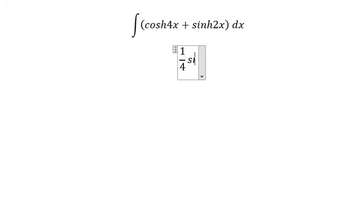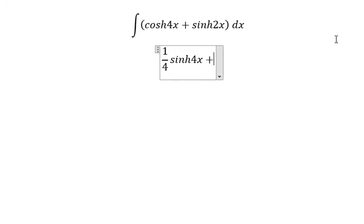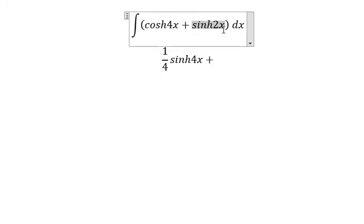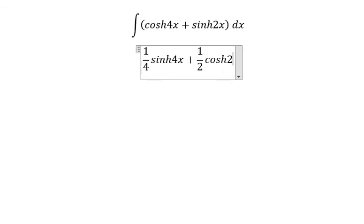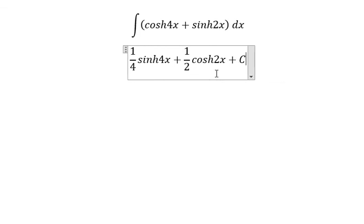The integration option gives us one over two cos two s, and we put about C. This is the end — thank you for watching.